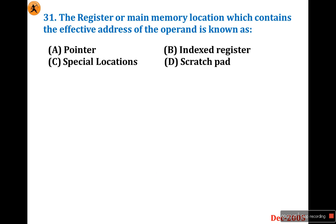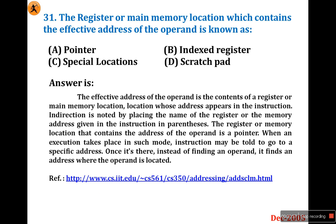This is the 31st question. The register or main memory location which contains the effective address of the operand is known as — and for this you might get a 50-50 between either pointer or indexed register.